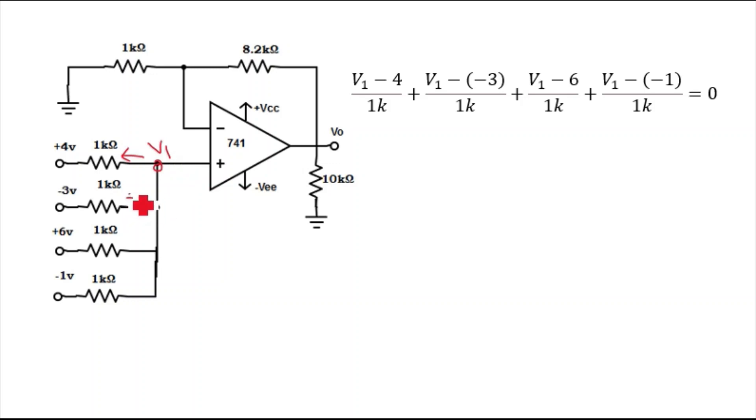So I'm considering all the currents are outgoing. I have written this formula: V1 minus 4 volt divided by 1k. V1 minus 4 volt, since I am considering all the currents are outgoing.